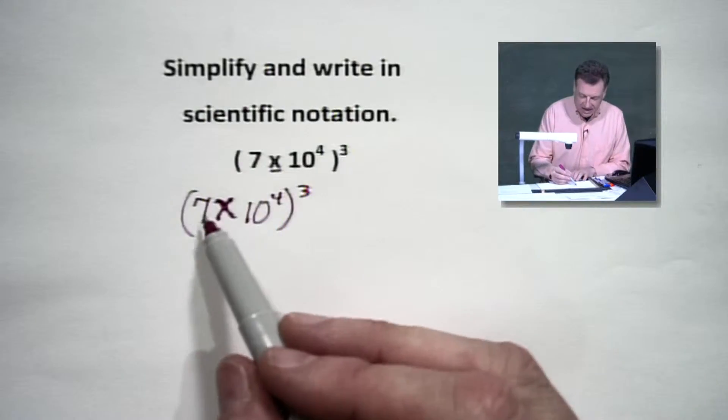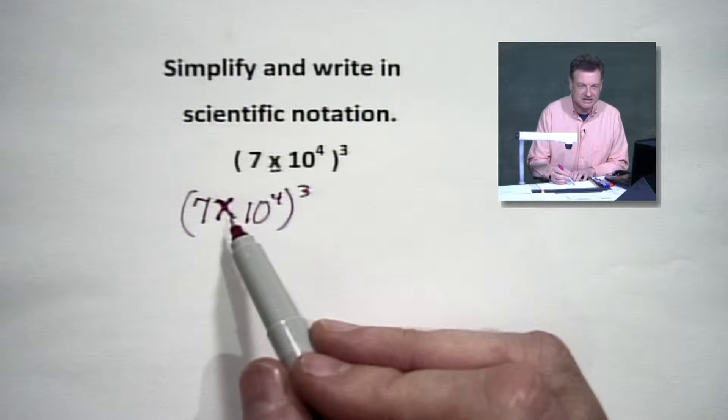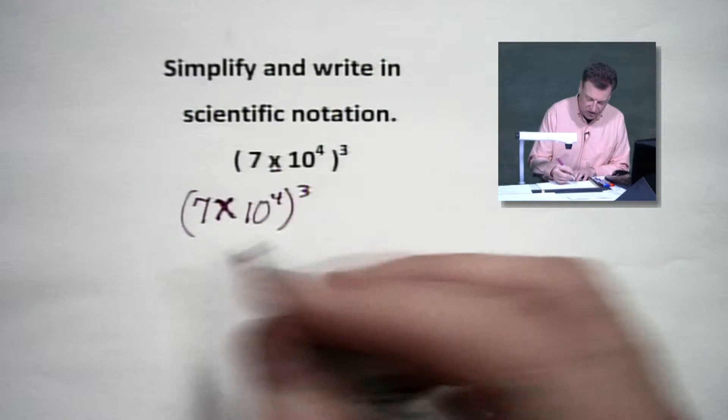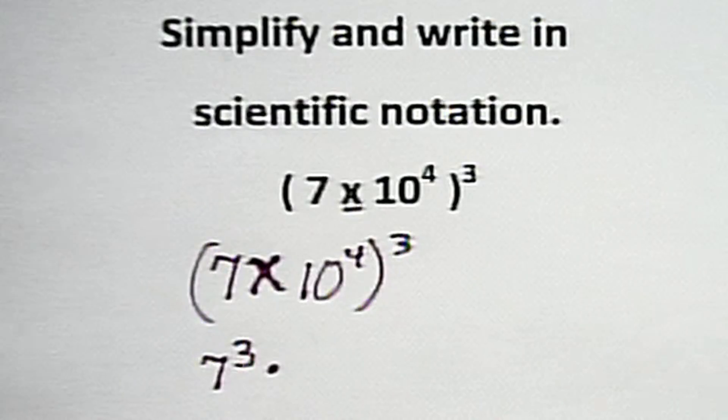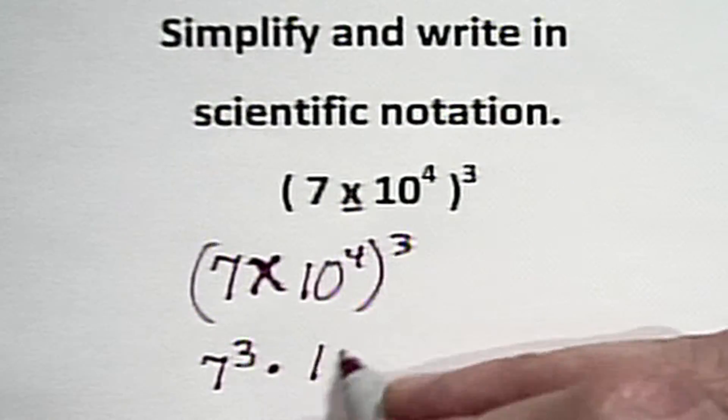But anyway, we're going to take everything inside here. That's not an X, that's a times symbol. So we're going to do seven to the third and then we're going to multiply. I put a dot there, that makes it a little bit nicer. And then we're going to take ten to the...